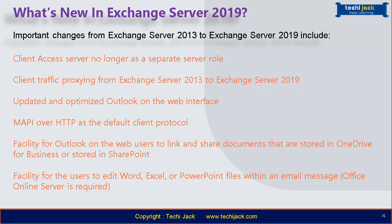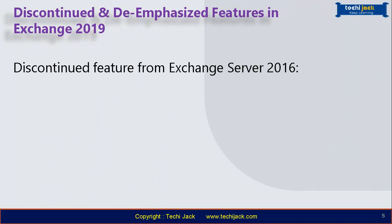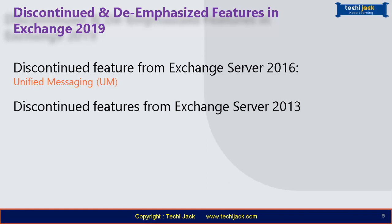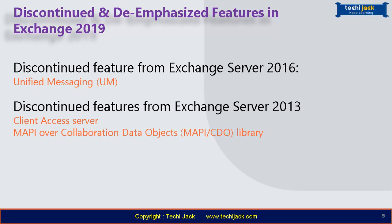Let's look at discontinued and de-emphasized features in Exchange Server 2019. Discontinued from Exchange Server 2016 is the Unified Messaging role, which is no longer available in Exchange Server 2019 — if you need this feature, you must use Skype for Business Cloud Voicemail. Discontinued from Exchange Server 2013 is the Client Access Server role, now integrated into the mailbox server role. MAPI over Collaboration Data Objects (CDO) library has been replaced by Exchange Web Services, Exchange ActiveSync, and REST API.